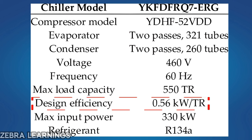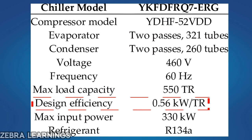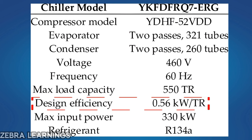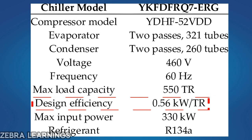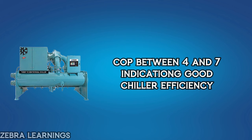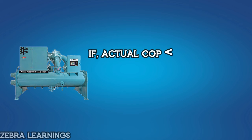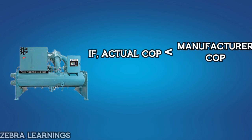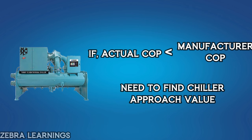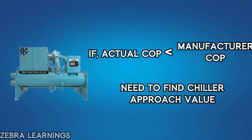Chiller manufacturers mention the COP level in the manual book. We can compare this value with the actual COP to determine the performance of the chiller. A COP level between 4 and 7 indicates good chiller efficiency. If the actual COP level is lower than the COP specified by the manufacturer, we need to find the chiller approach value. The chiller approach value is measured at the evaporator and condenser of the chiller. By measuring this value, we can identify the source of the problem and improve the efficiency of the chiller by fixing it.